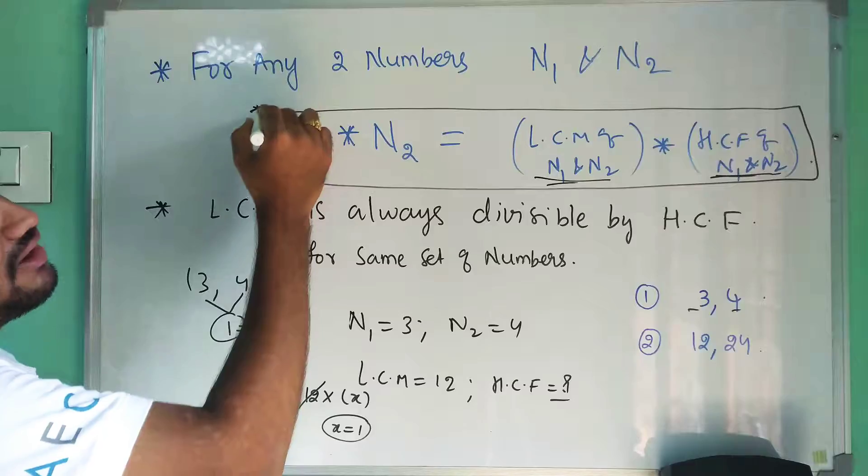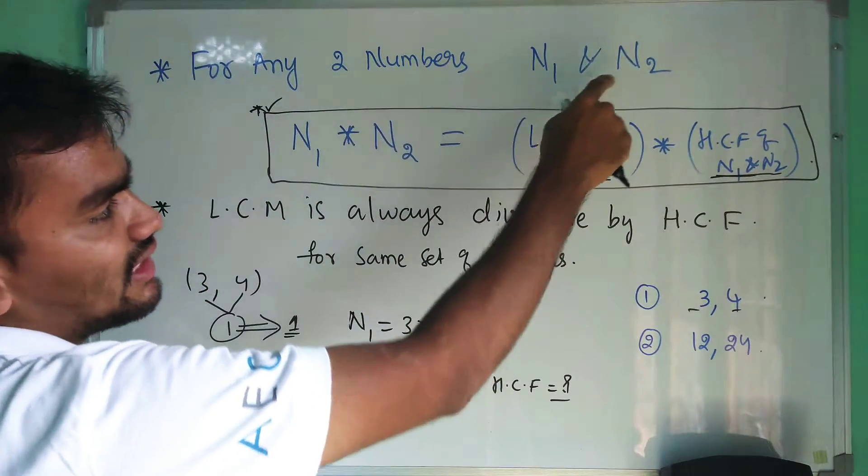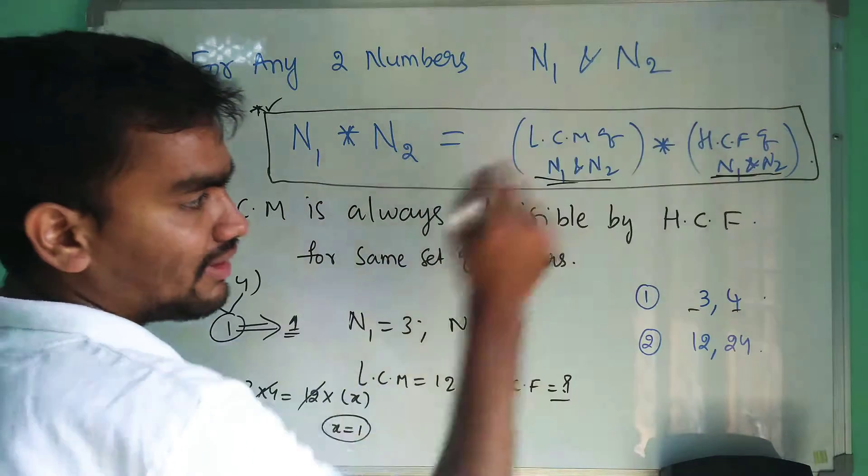So in this way this formula is verified and you can follow this formula: for any two given numbers n1 and n2, the product of them is equal to the product of their LCM and HCF.